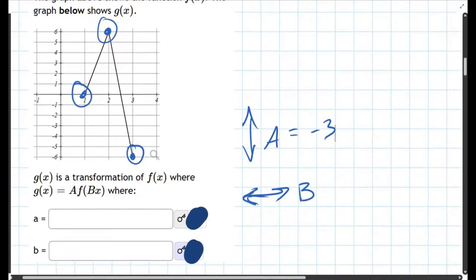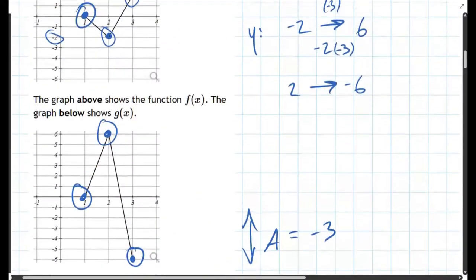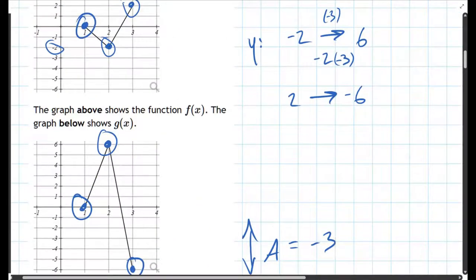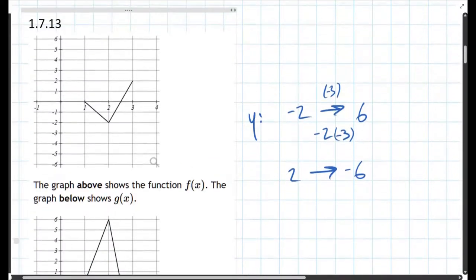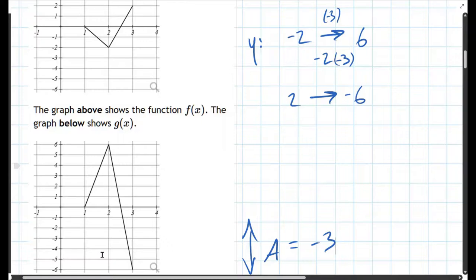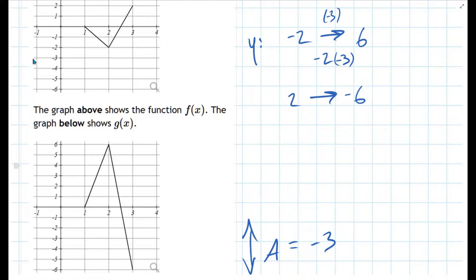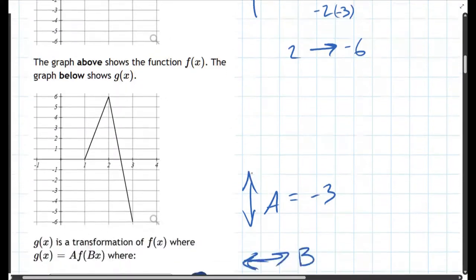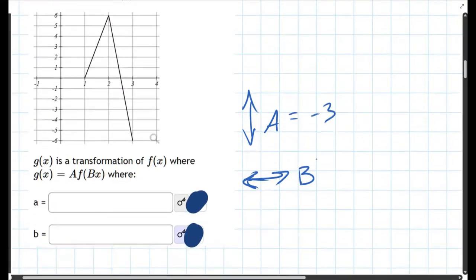Let's think about the horizontal, so we're going to think about x-coordinates now. Do the x-coordinates change? The x-coordinates were positive one, two, three, and they become positive one, two, three. So the x-coordinates didn't change at all. They didn't shift, they didn't stretch. So that means b had no effect. b is the horizontal.